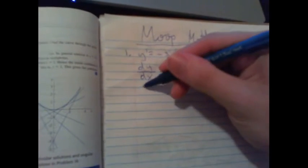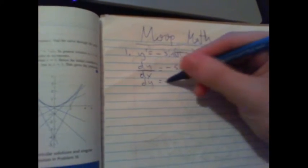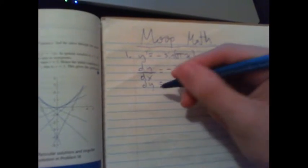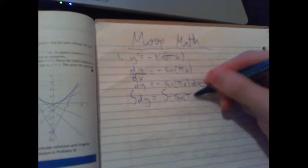It says solve it by integration. So what you want to do is get all the y terms on one side, all the x terms on the other side. So dy equals negative sine pi x dx. And then you can integrate both of these. The integral of dy equals the integral of negative sine pi x dx.